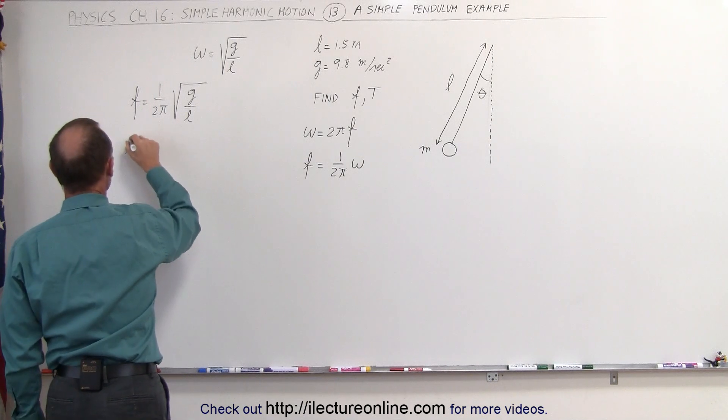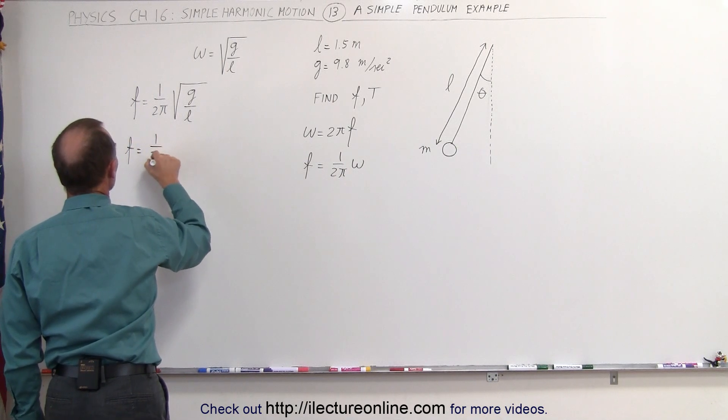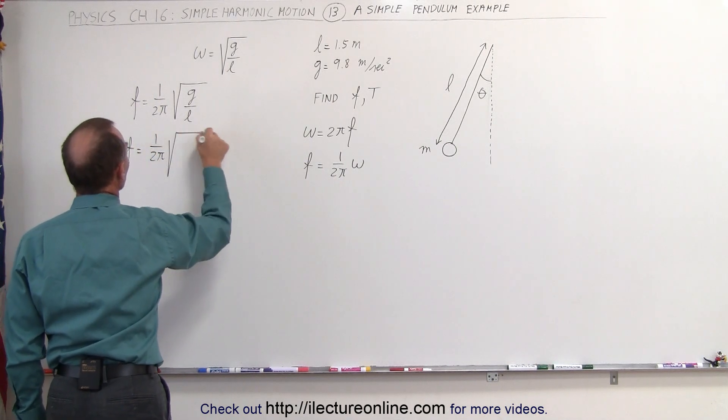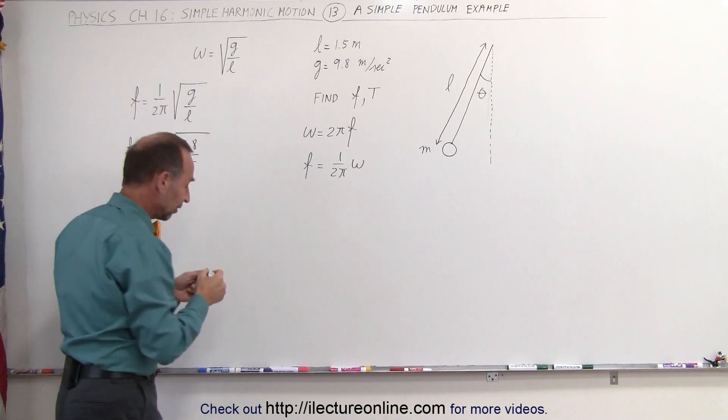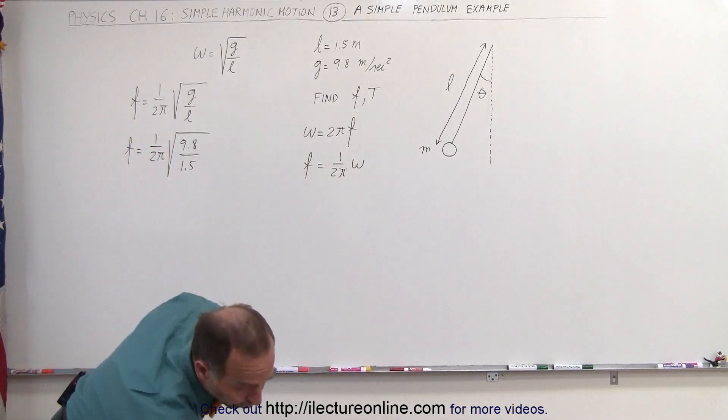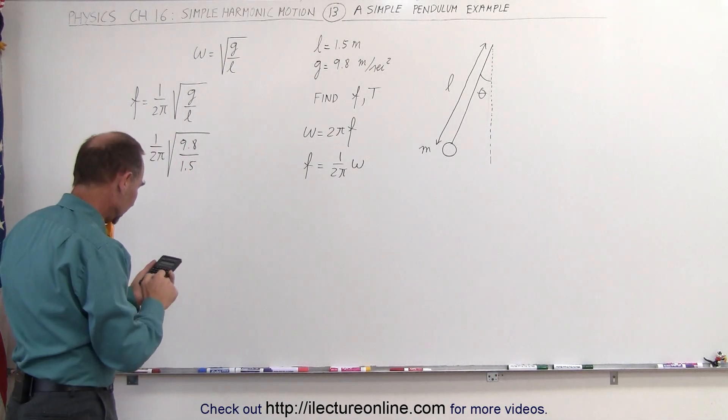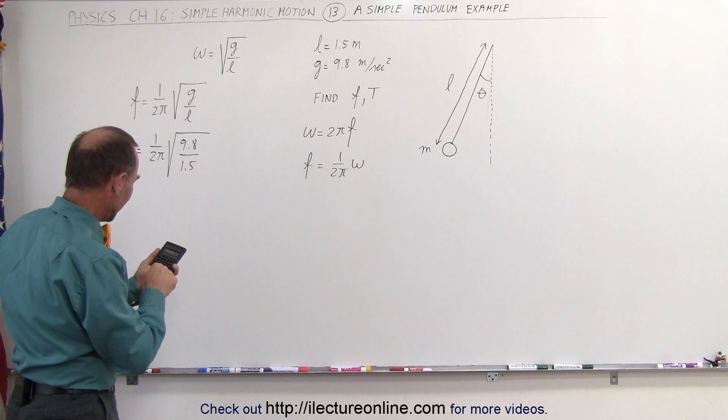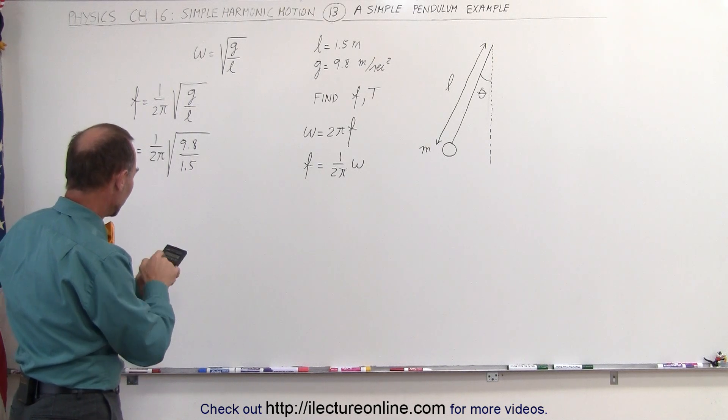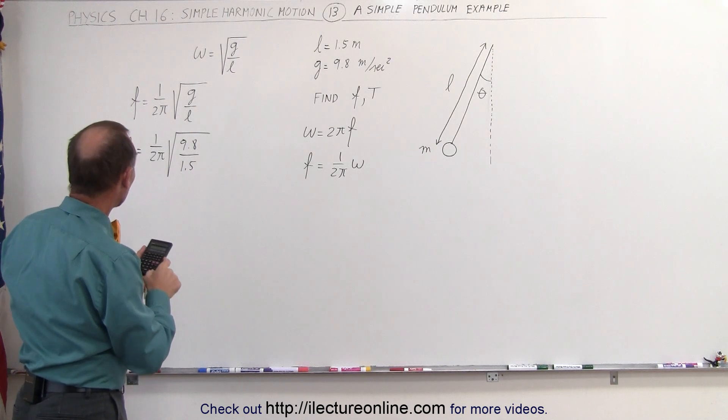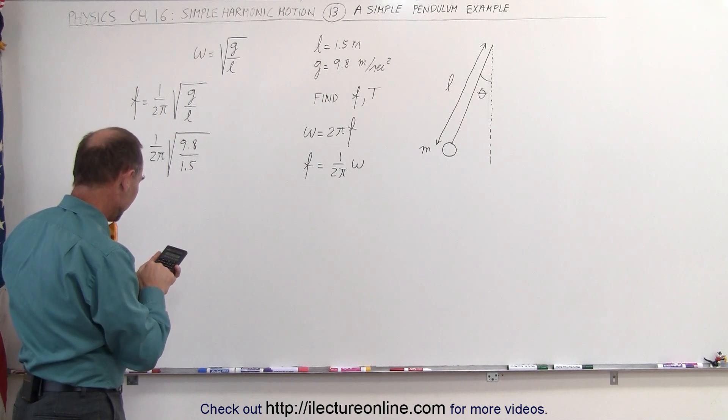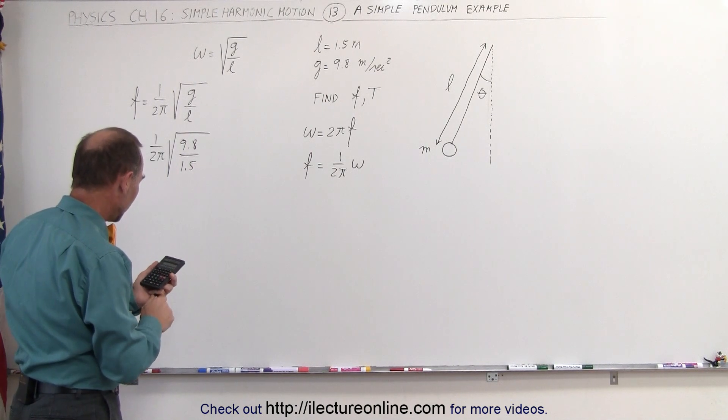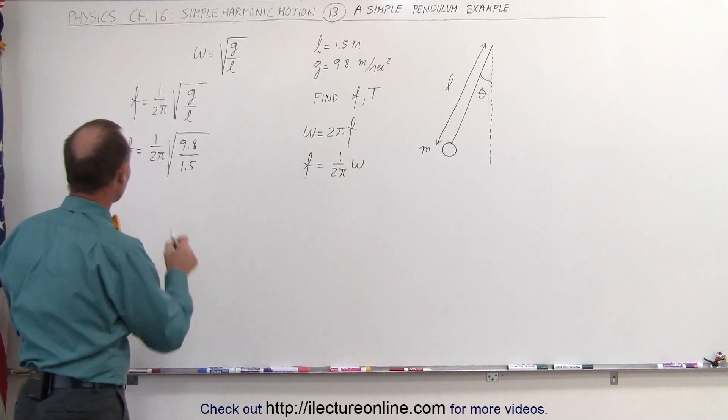In this case, we have the frequency is equal to 1 divided by 2 pi times the square root of g, which is 9.8 divided by l, which is 1.5. Notice that the frequency will be in terms of hertz, or 1 divided by seconds. 9.8 divided by 1.5, and then we take the square root of that, we divide that by 2, and divide by pi, and we get 0.407 hertz.